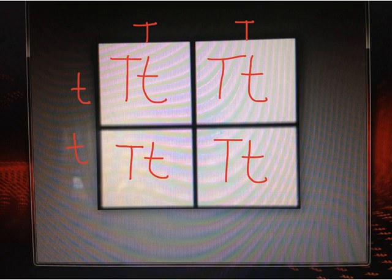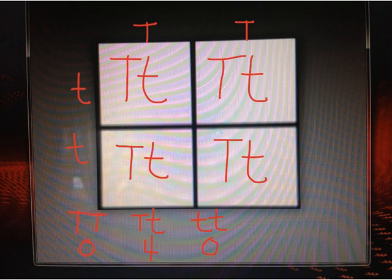We can then predict the genotype and phenotype probability of the offspring of the said parental cross. Since all of the offspring receive a dominant capital letter T allele and the recessive small letter t allele, all of the offspring have a heterozygous gene for stem height. Therefore, there is a 100% probability that the offspring of a homozygous dominant tall plant and a homozygous dwarf plant have a heterozygous allele for stem height.